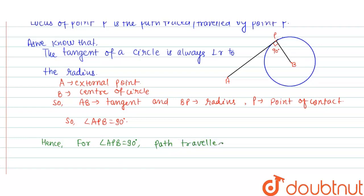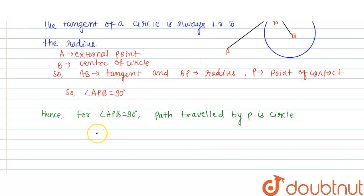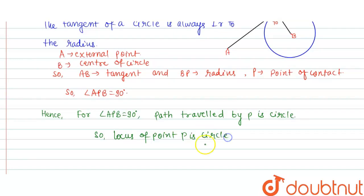So the path traveled by P is a circle. Therefore, the locus of point P is a circle. I hope the solution was clear. Thank you.